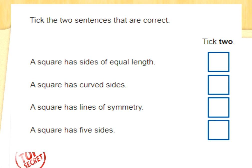Tick the two sentences that are correct — tick two. A square has sides of equal length. A square has curved sides. A square has lines of symmetry. A square has five sides. Straight away you should know a square does not have curved sides. A square does have sides of equal length — tick that. A pentagon has five sides, so a square can't have five sides. A square has lines of symmetry, which means if we put a mirror down the middle of a square we would see the same shape reflected. Well done.